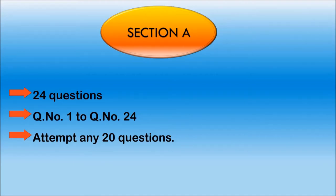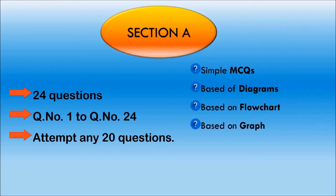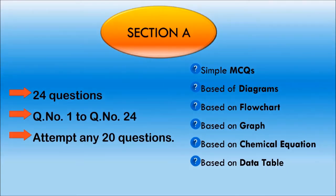Now, what type of questions will be asked in this section? The questions could be simple MCQ types or MCQs based on diagrams, flowchart, graph, chemical reactions or equations, or even data tables. By simple MCQ, I mean the questions which are straight objective type with four options. For example, the question could be like this: Which of the following are transparent? A - wood, B - wall, C - water, D - mirror.